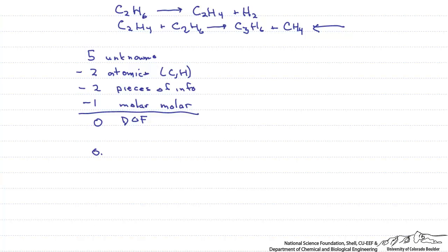So the first one we look at is the fractional conversion. So 0.7 equals the moles fed in of ethane minus the moles of ethane that come out of the reactor divided by the moles of ethane.